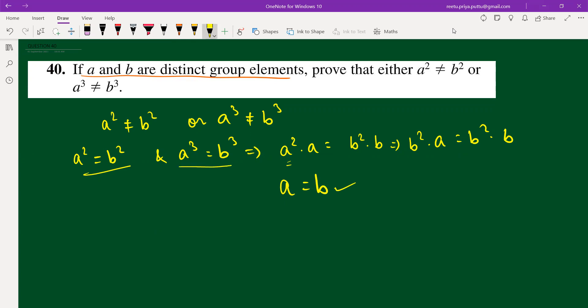This is not possible because we have taken a wrong supposition. From there you can say that either a² is not equal to b² or a³ is not equal to b³. It's an either/or case.